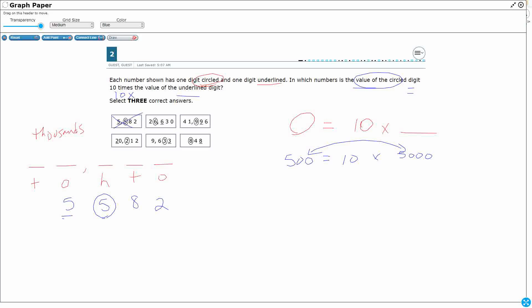So let's look at this next one. So I've got 26,630. And I've got my 6 circled there. My 6 underlined there. So let's build it.